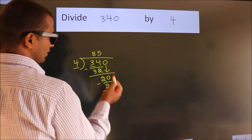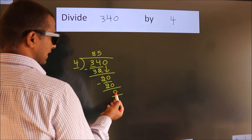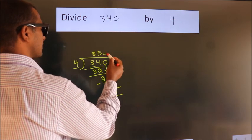After this, no more numbers to bring down, and we got remainder 0. So this is our quotient.